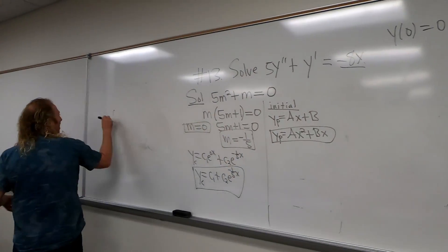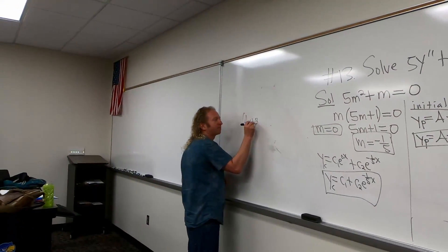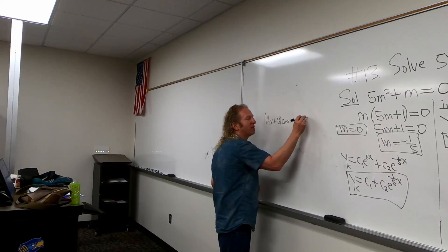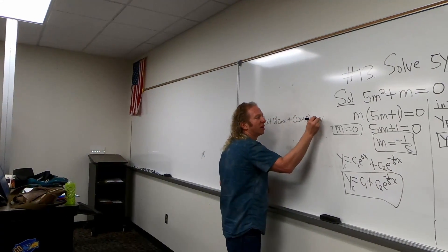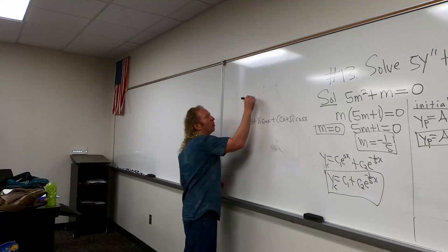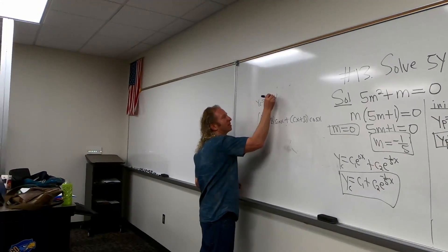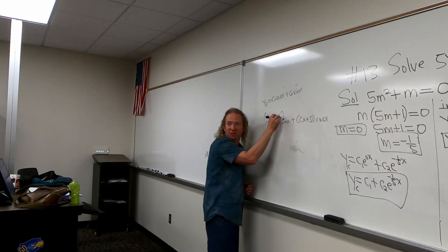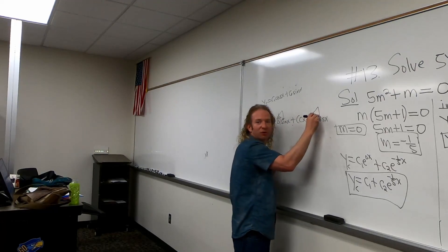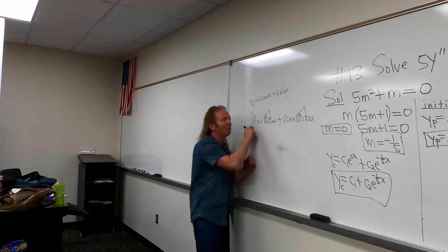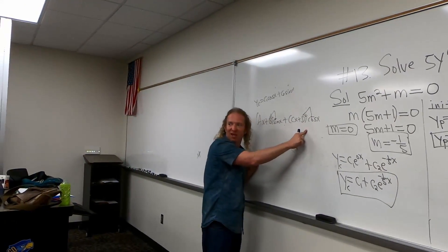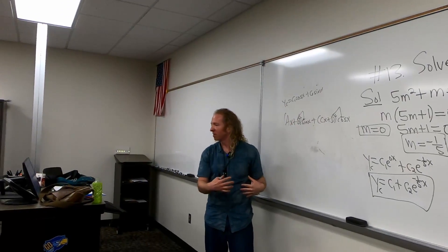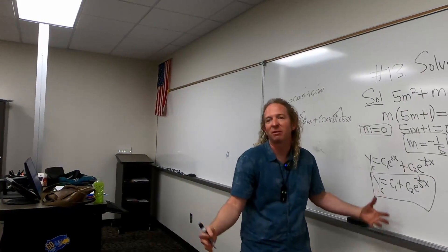It's like when we had (AX plus B) sine x plus (CX plus D) cosine x, and the complementary solution had C1 cosine x plus C2 sine x — B sine x repeats, D cosine x repeats, and we multiplied the whole thing by x. Same reason: it came from one thought process.